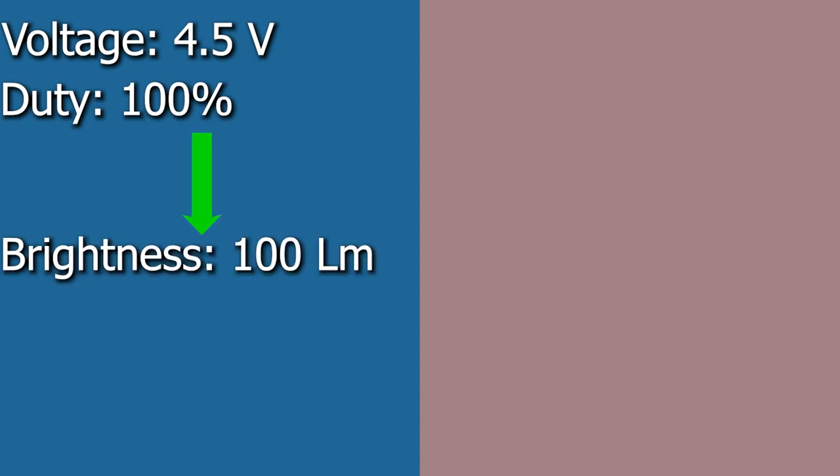Let's have a simple example. Let's say the voltage of the batteries is 4.5V and duty cycle is 100%, which corresponds to brightness of 100 lumens, let's say. Now MCU measures battery's voltage and gets 4.5V.